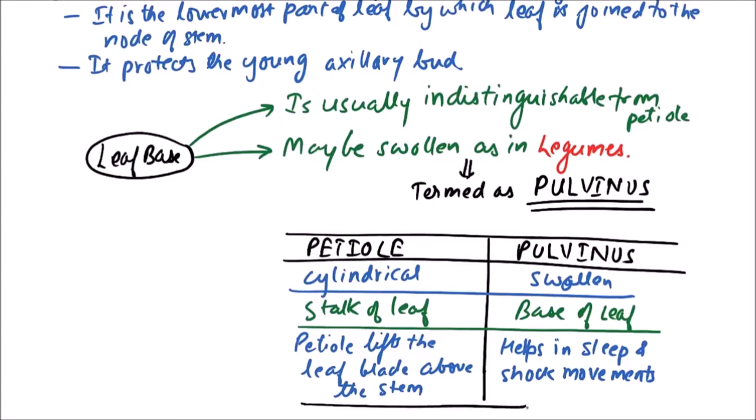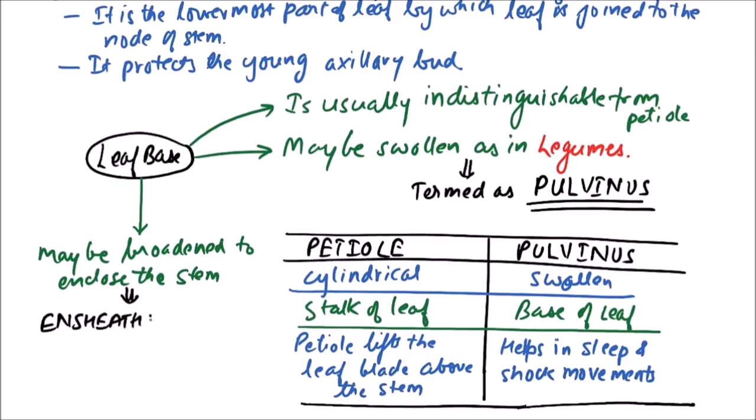These are the points of comparison between a petiole and a pulvinus. The leaf base may be broadened to enclose the stem. This type of leaf base is known as ensheathing leaf base.